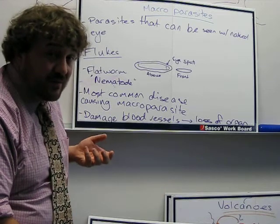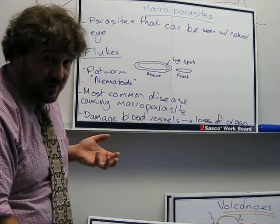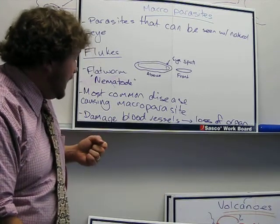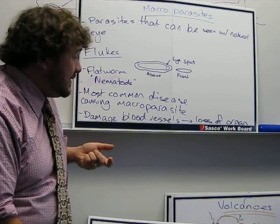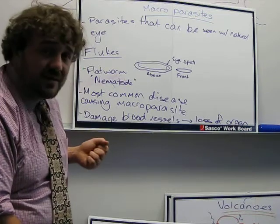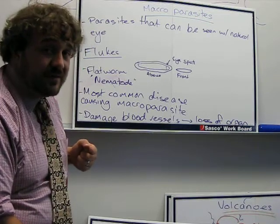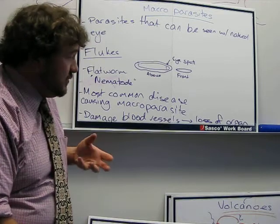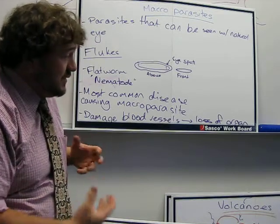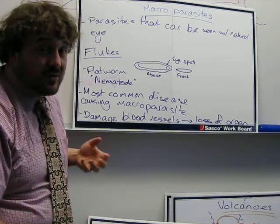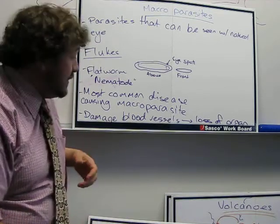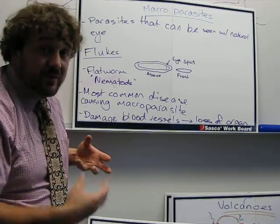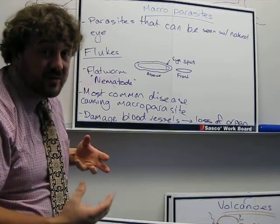They're not the ones we always think of — we usually think of tapeworms, which we'll talk about in a moment. Flukes tend to cause damage to blood vessels, and this is the one which can result in serious diseases such as loss of organs or organ failure, because the organ is not getting enough blood and therefore enough oxygen to itself.